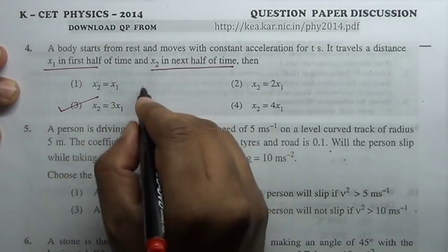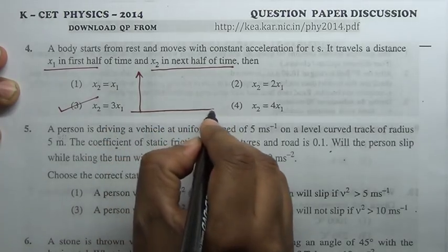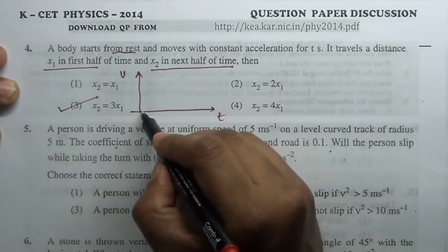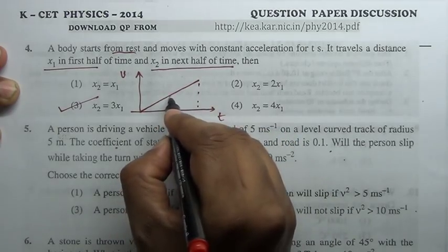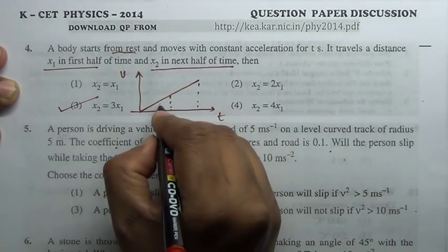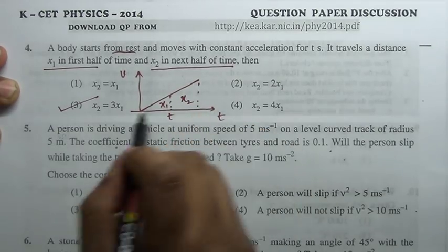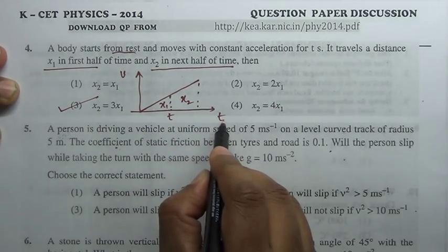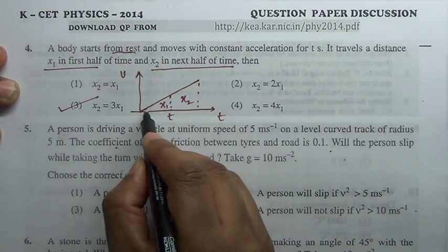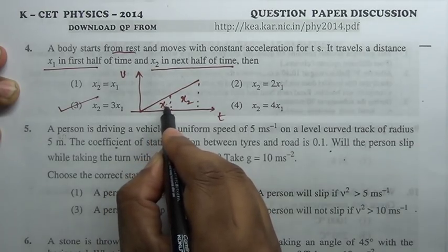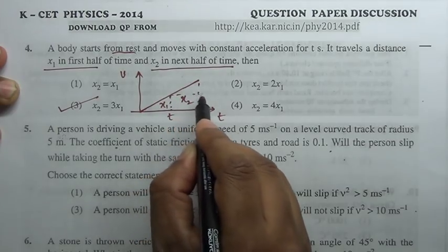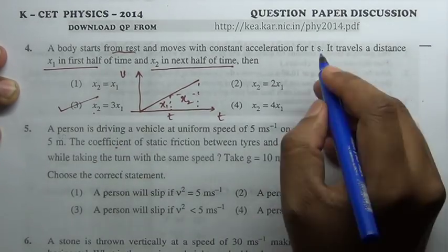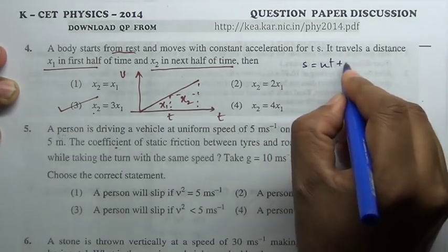Using graph, let me plot a graph of velocity versus time. Starting from rest, the body is accelerated for half of the distance x1, the other half is x2. Carefully observe: area under velocity time graph represents displacement. The area of x2 is 3 times the area of x1, therefore x2 is 3 times x1.